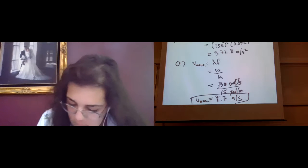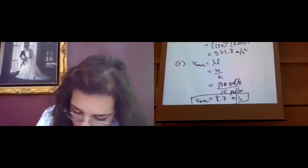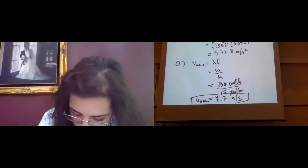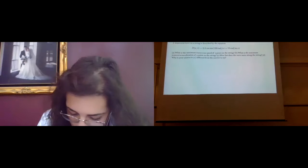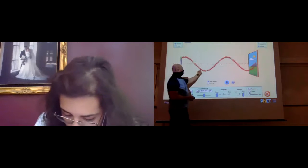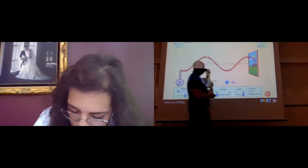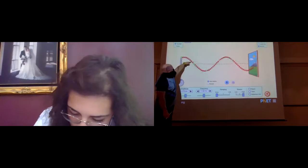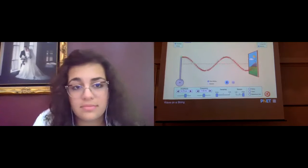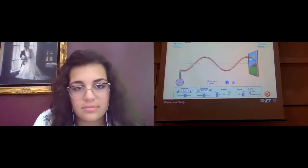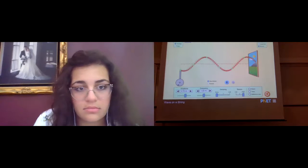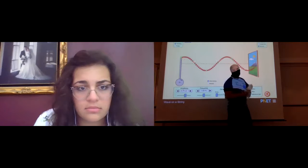Part D asks why the answer to A is different than the answer to C. The difference is that C is specifically talking about the wave itself — how fast the wave is moving — whereas A is talking about how fast the particles are in the harmonic oscillation. The wave speed refers to how fast this wave is traveling, while the particle speed refers to the maximum velocity a particle has when it reaches the origin. Our wave situation is more complicated because it involves two separate objects: the harmonic oscillation of a single piece of medium through time, and the speed at which the wave itself is moving.